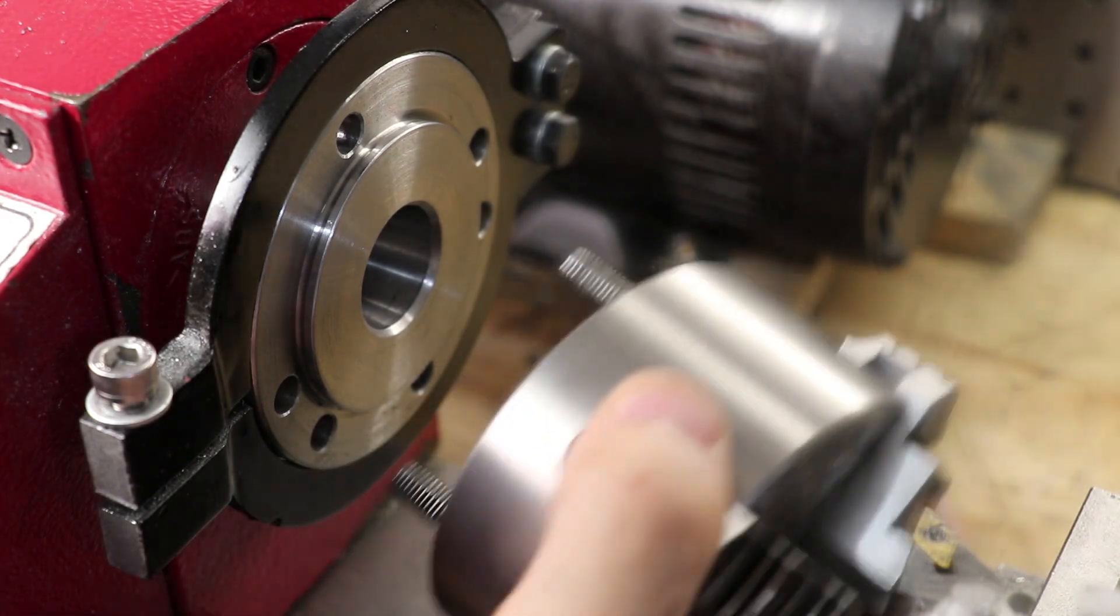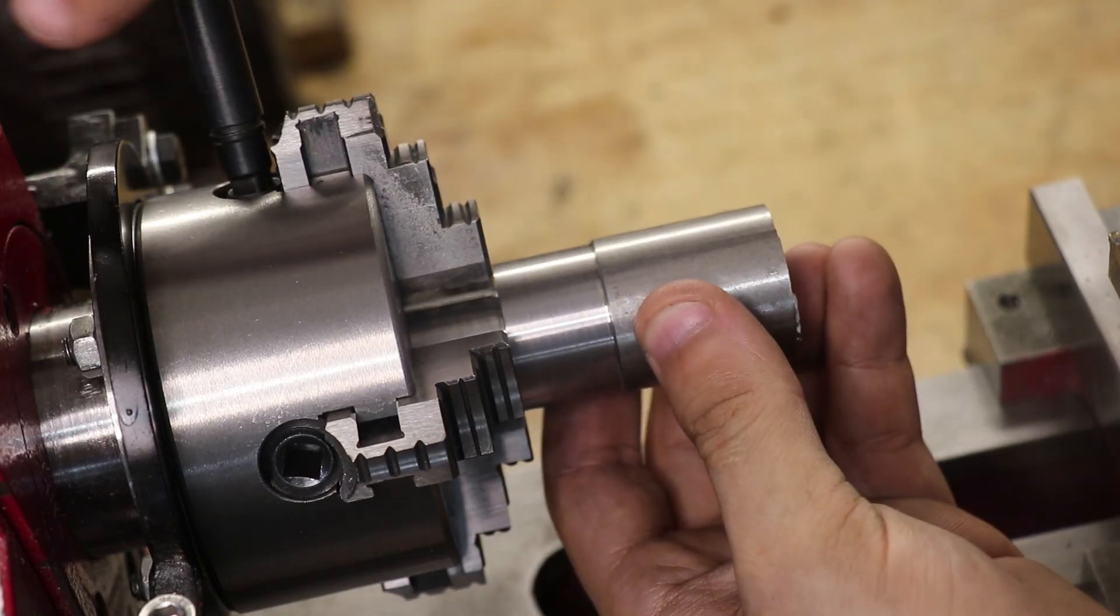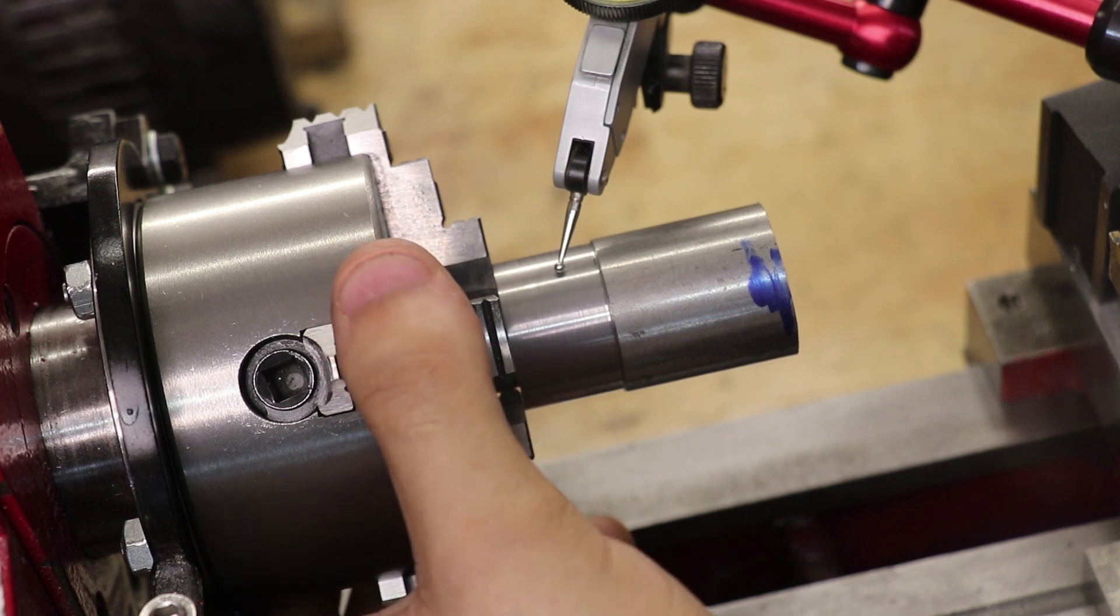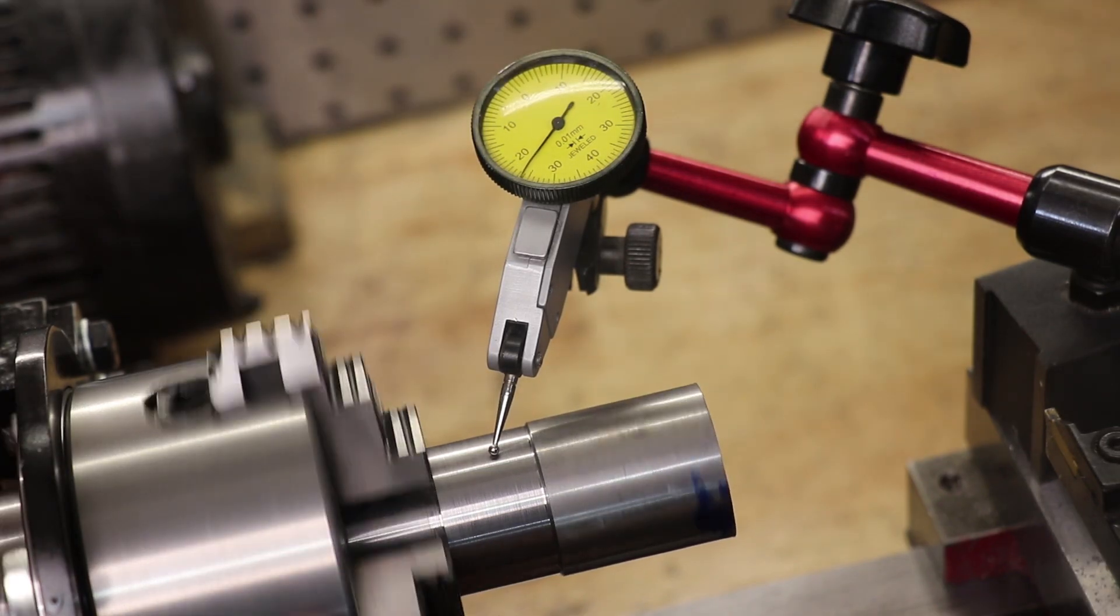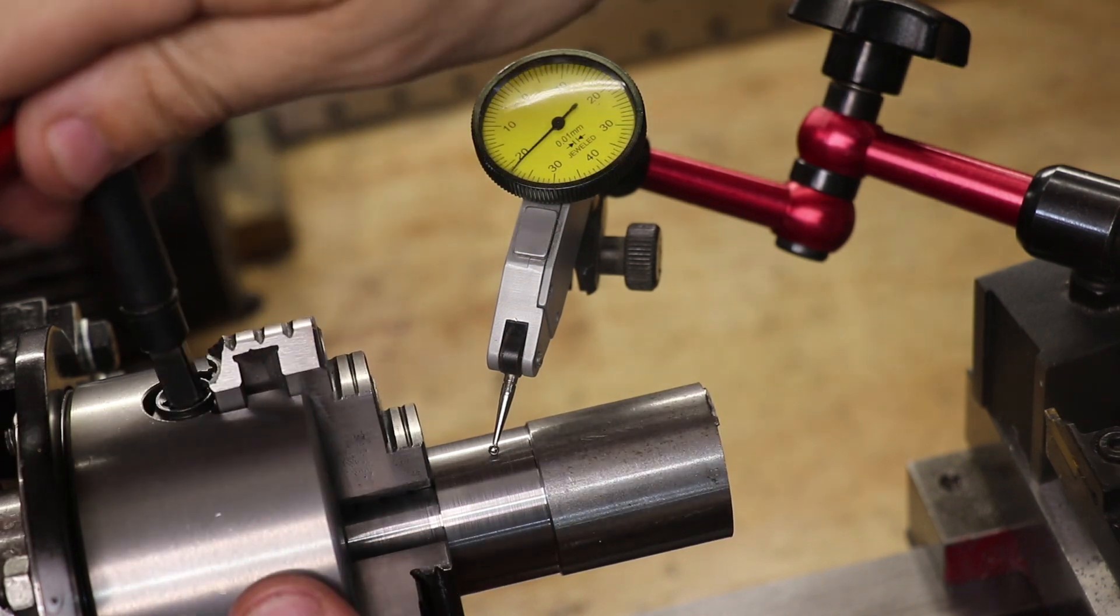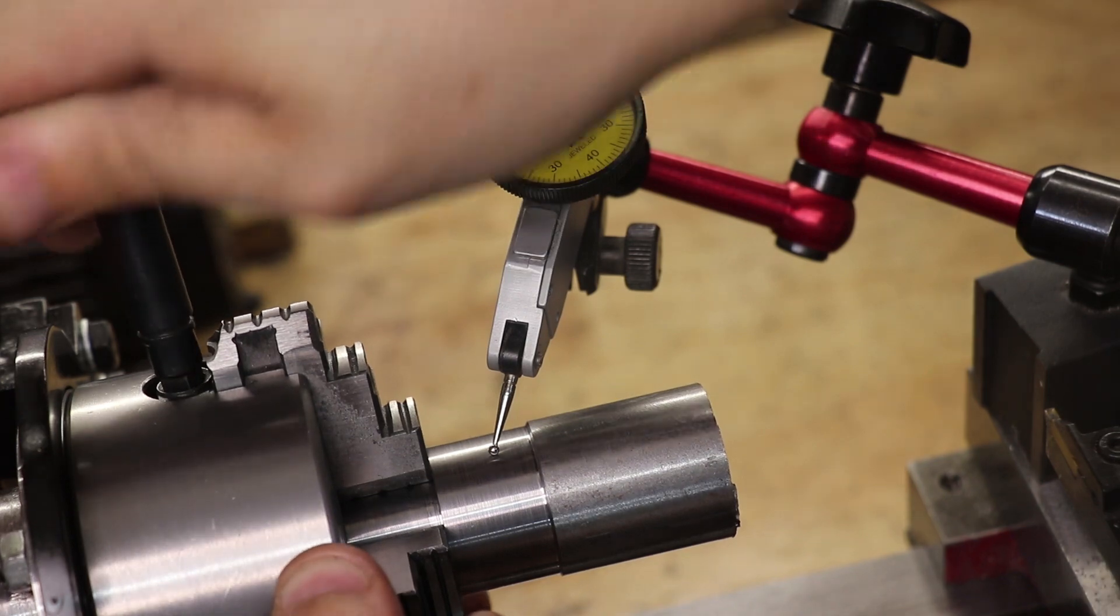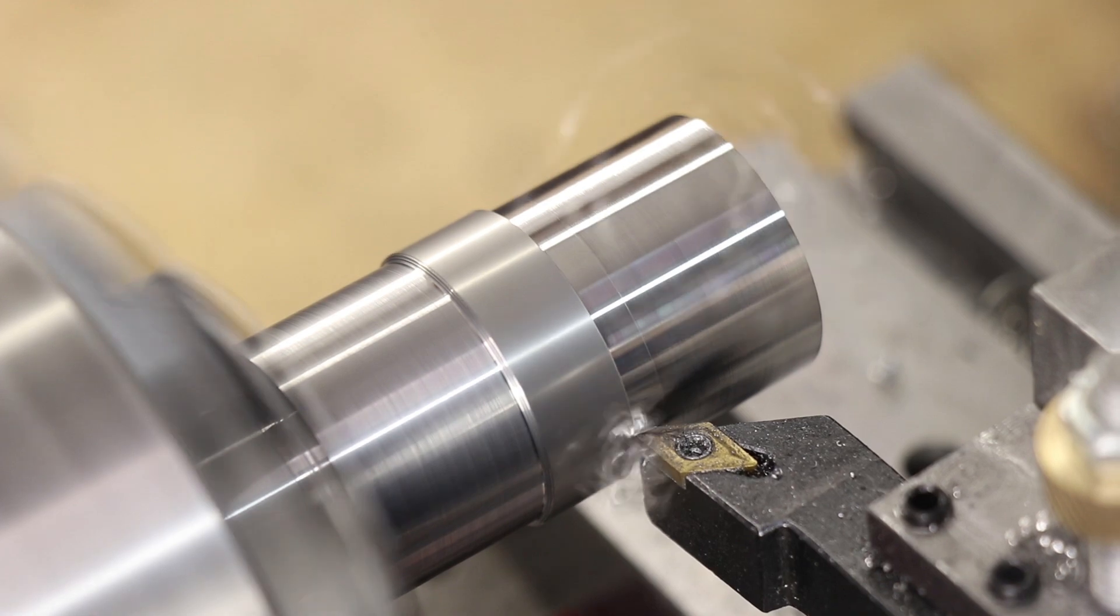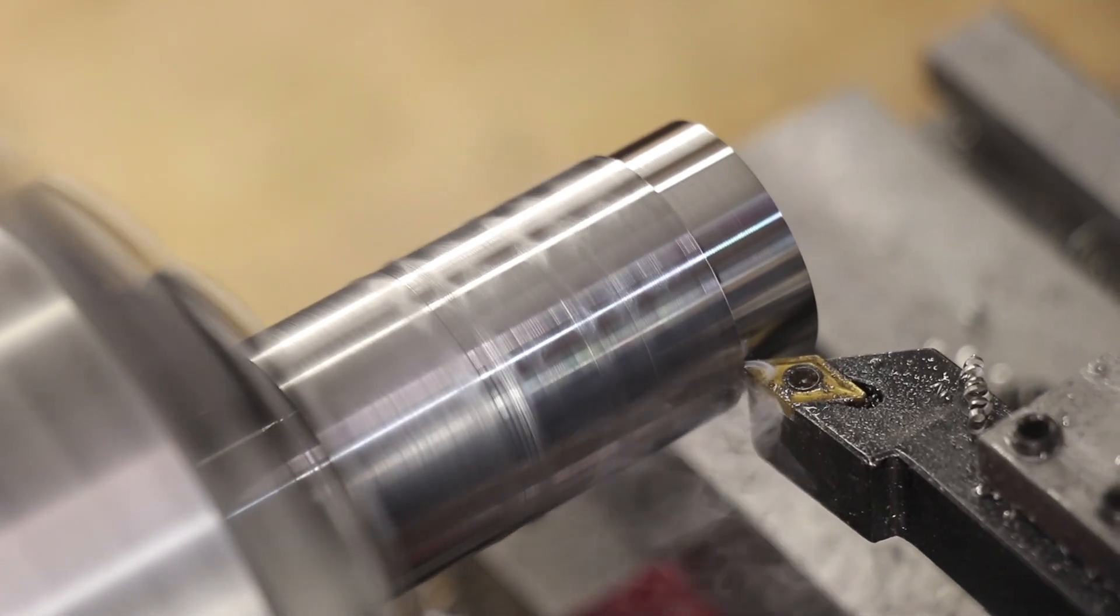I swapped the chuck out for an independent four jaw chuck and then I dialed it in. I then took the outside down to 22 millimeters. Now I left a flange to help me hold the tool holder while I heat it.